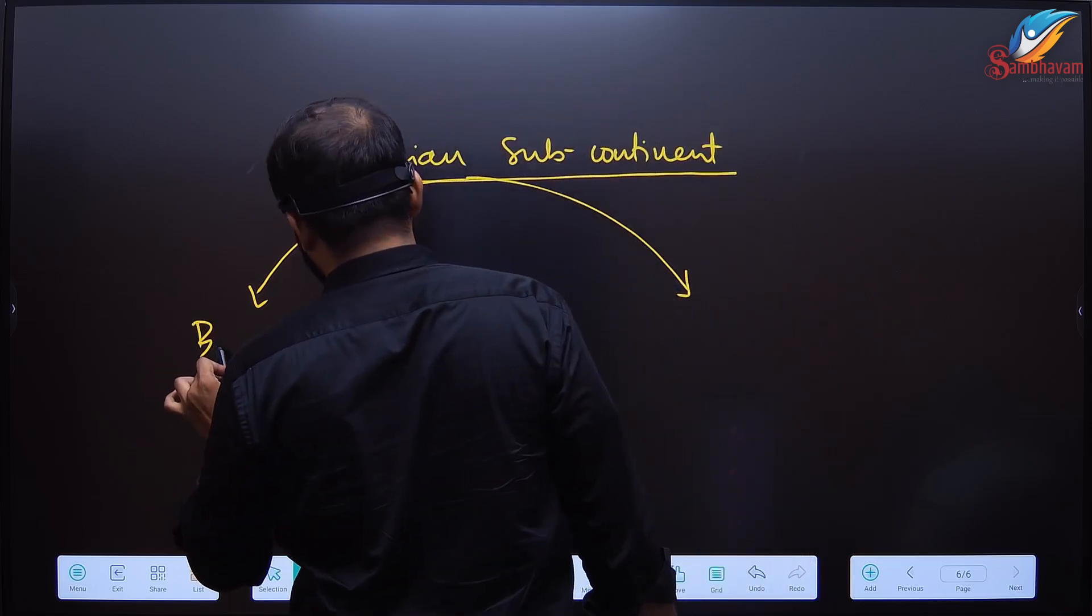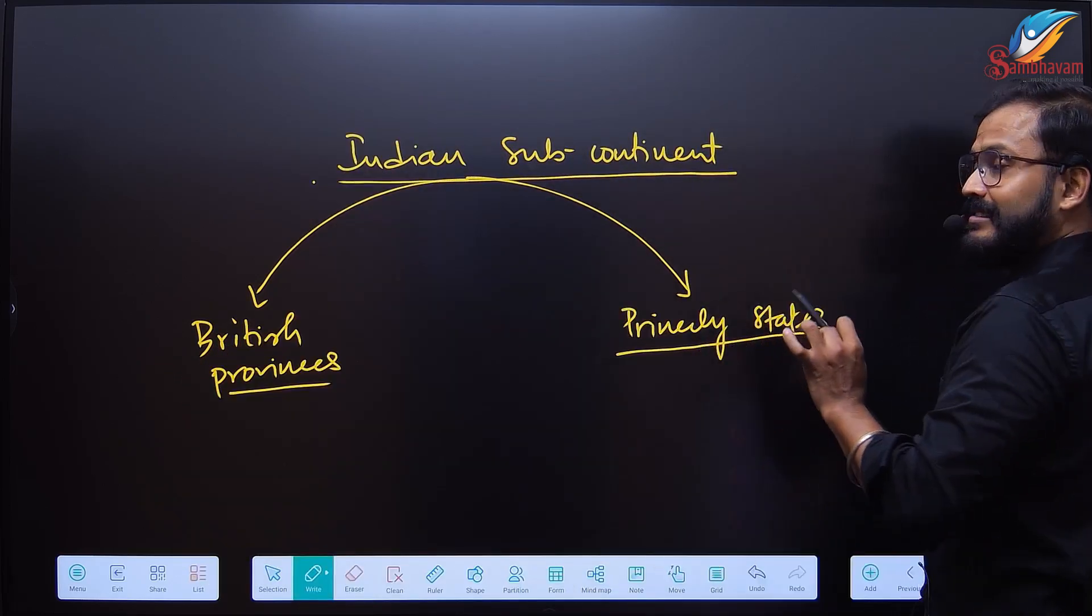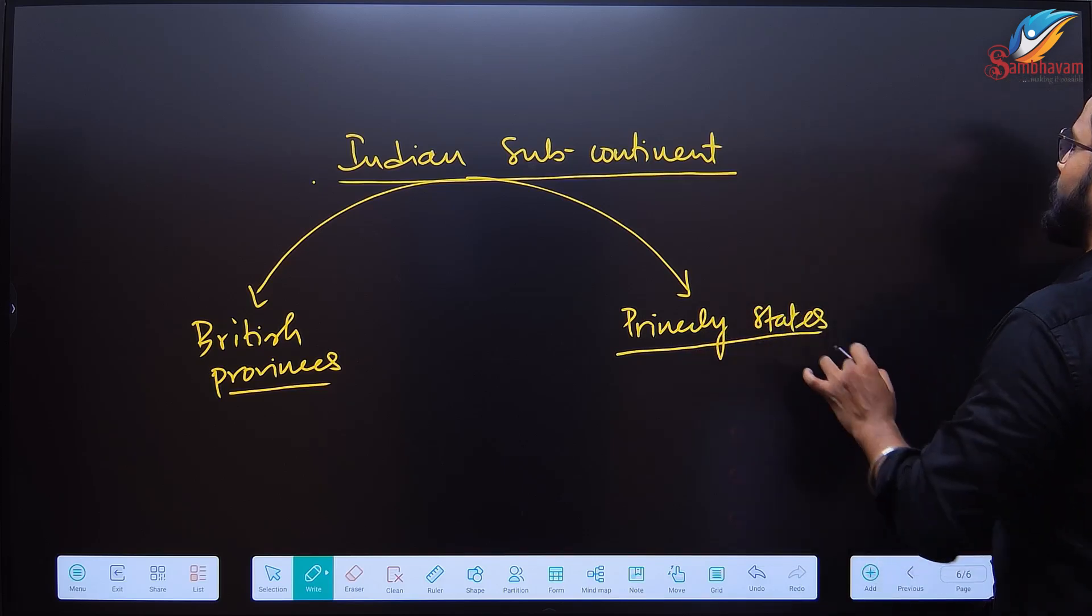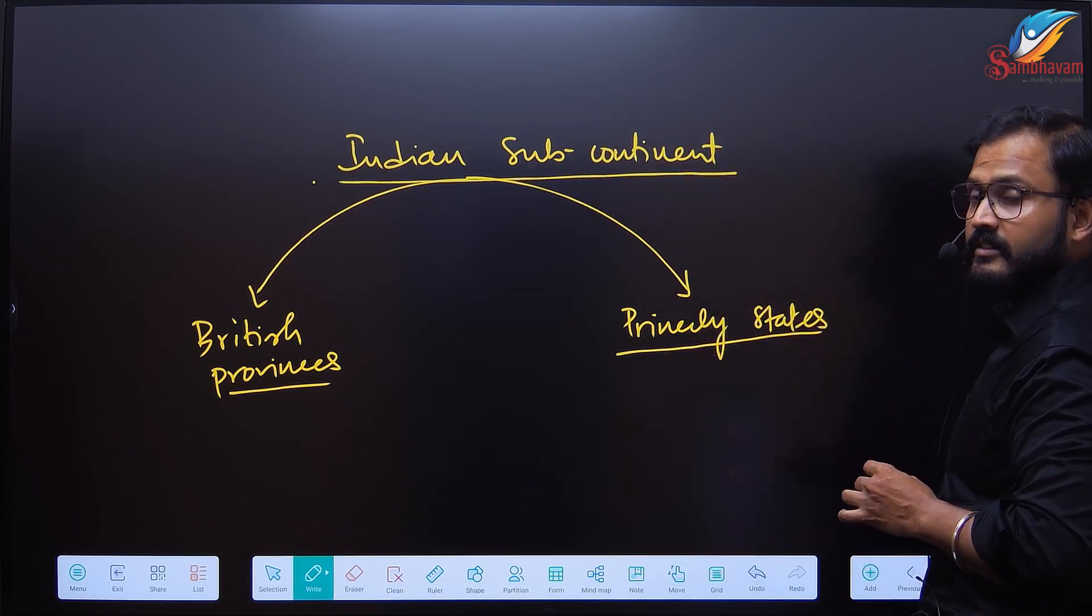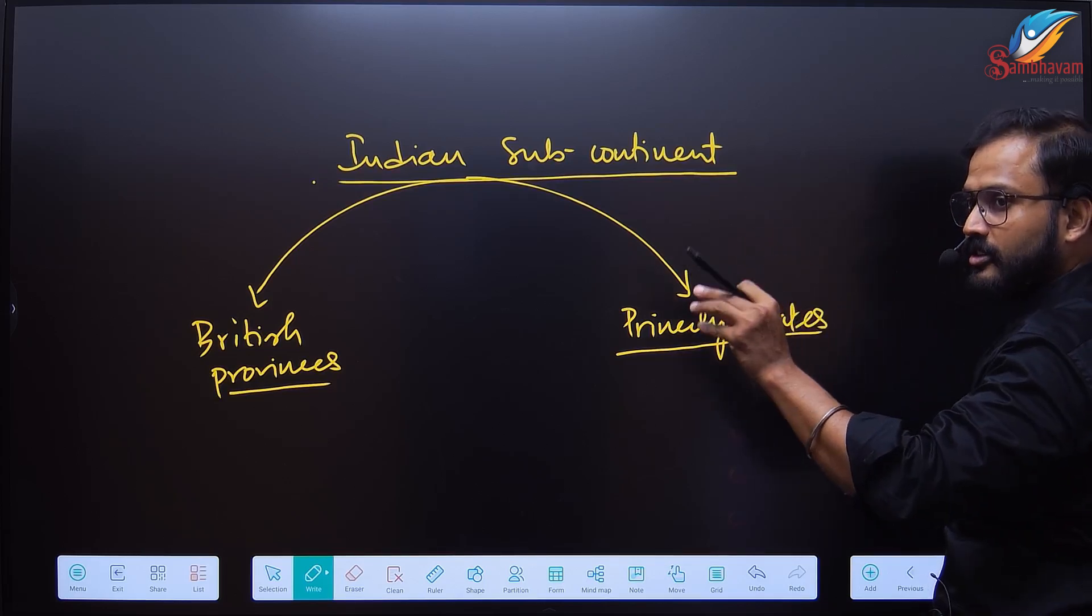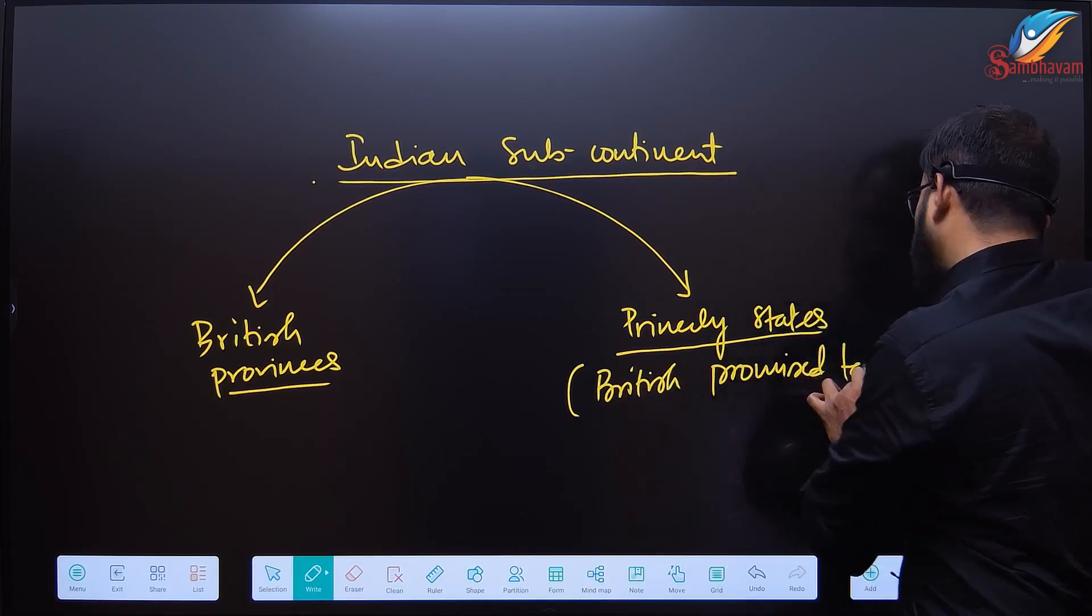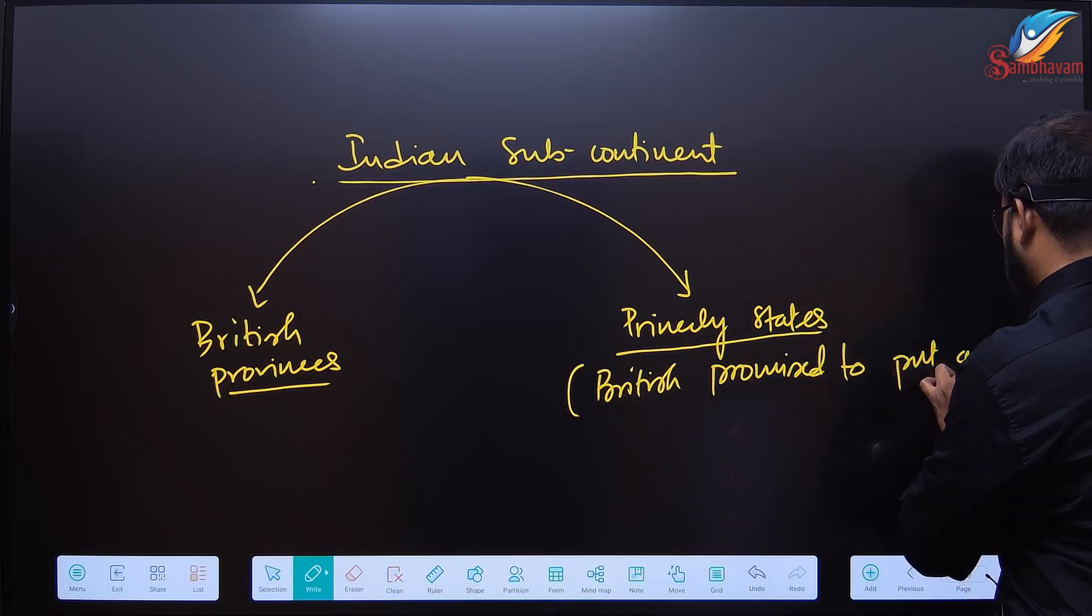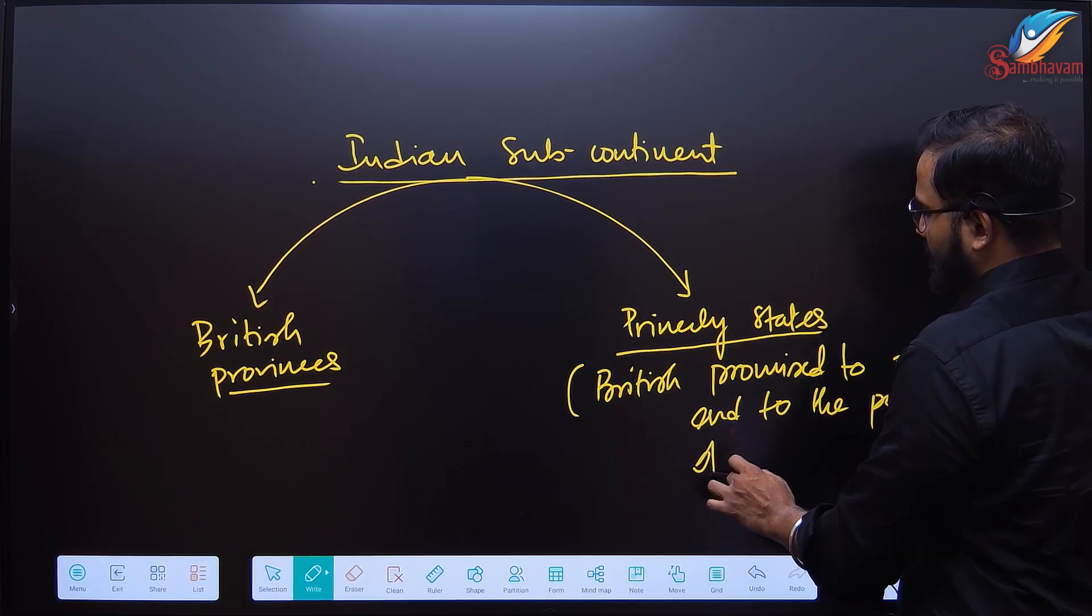For the princely states, the root problem of the 1857 revolt was to be identified as the grievances of the princely states. Thereby, British expansionist territorial policy was abandoned. British promised to put an end to the policies of annexation and expansion. That means technically speaking, the doctrine of lapse was abandoned.